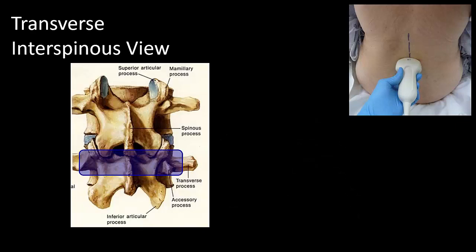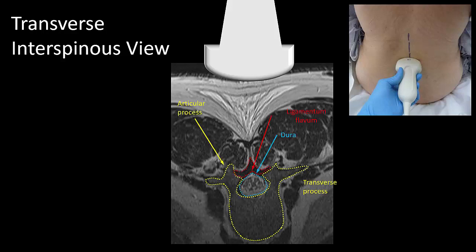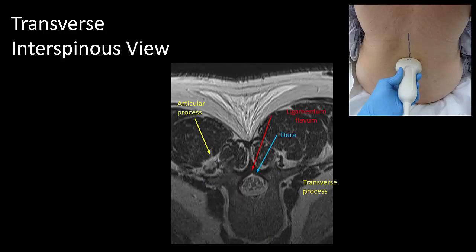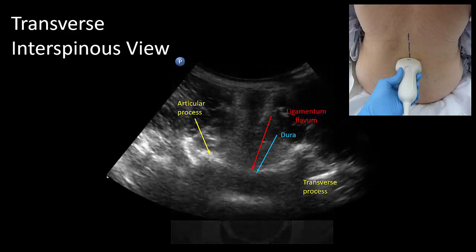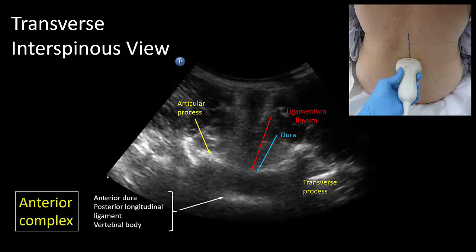Shifting the probe cranially or caudally will bring the beam into the interlaminar space, where there is now no bone between the probe and the vertebral canal, so we will see the anterior complex appear and sometimes, but not always, the posterior complex. In this plane, we will also see the articular process and transverse process shadows.